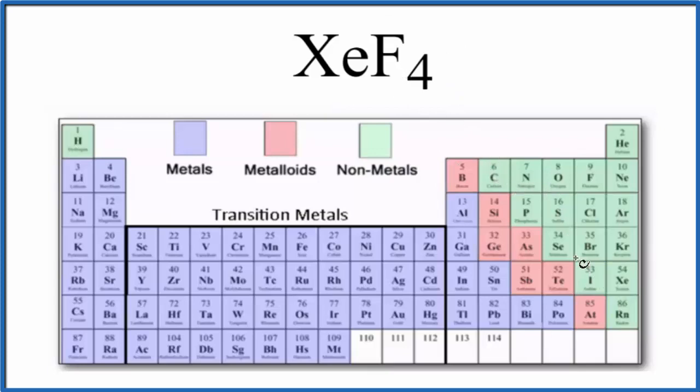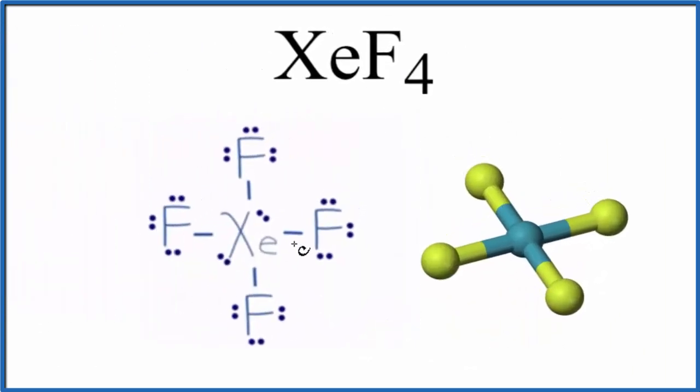Let's take a look at the structure, though. So here's a Lewis structure. We have xenon in the center. And these single lines here, these are called single bonds, they represent a pair of electrons. And those electrons are shared. These are covalent bonds. The electrons are shared.